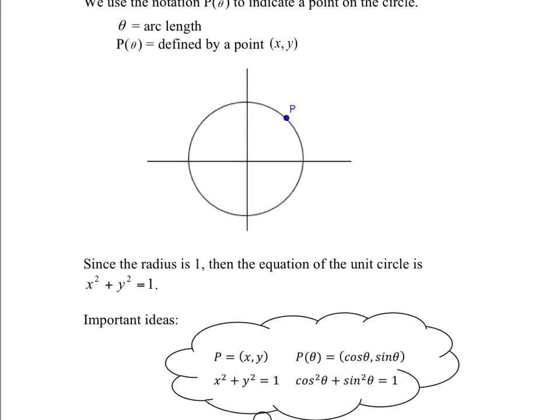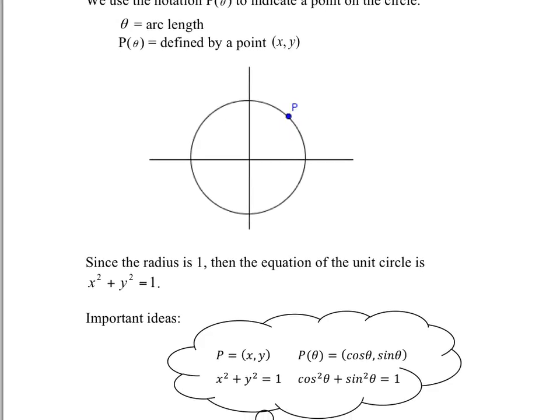A couple things to notice: any equation of a circle with radius 1 will be written x squared plus y squared equals 1. The actual equation of any circle is x squared plus y squared equals r squared, where r is the radius. But since the radius is 1, x squared plus y squared equals 1, because it's 1 squared. You need to know this formula — you're going to use it quite often this year.